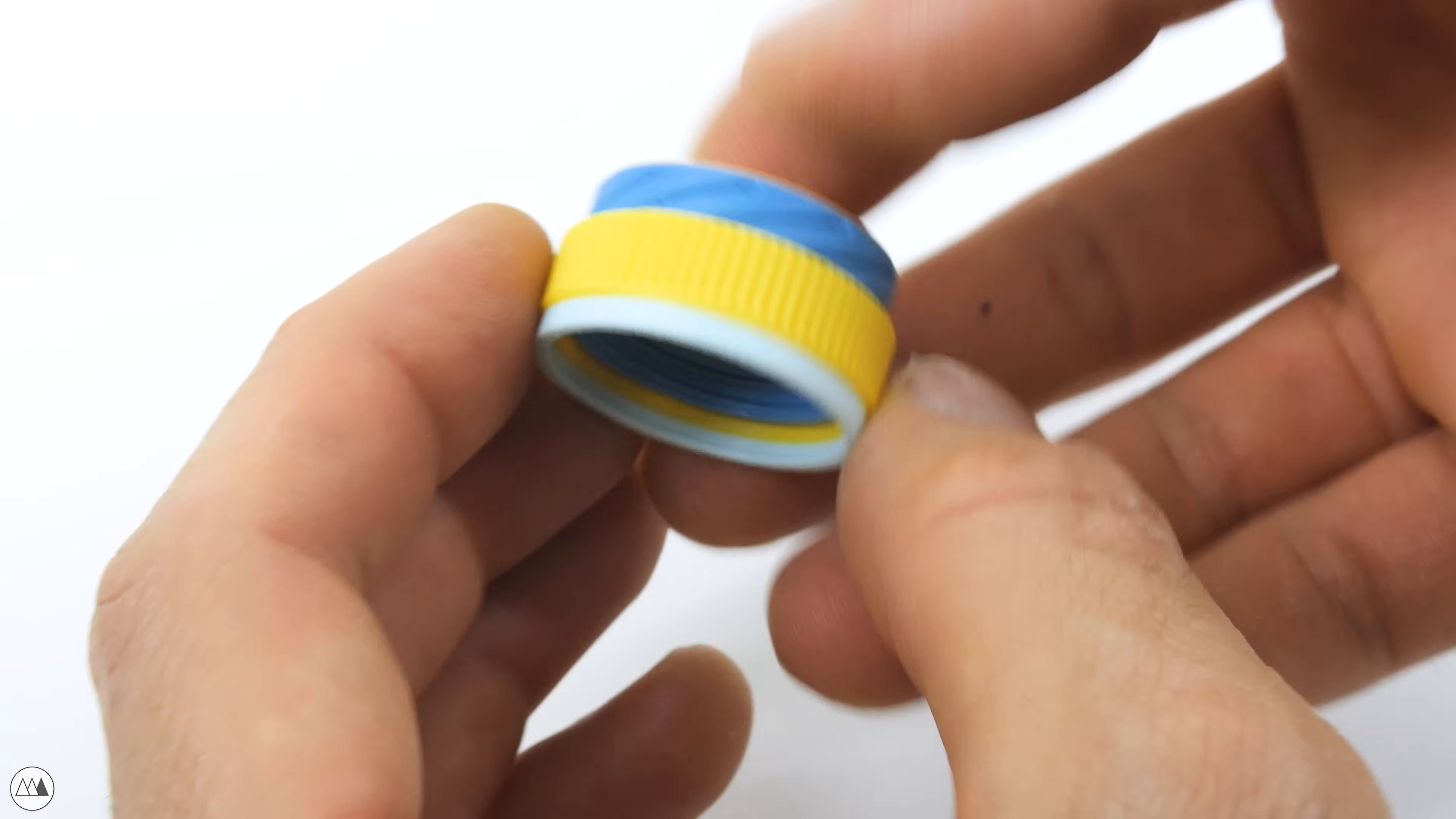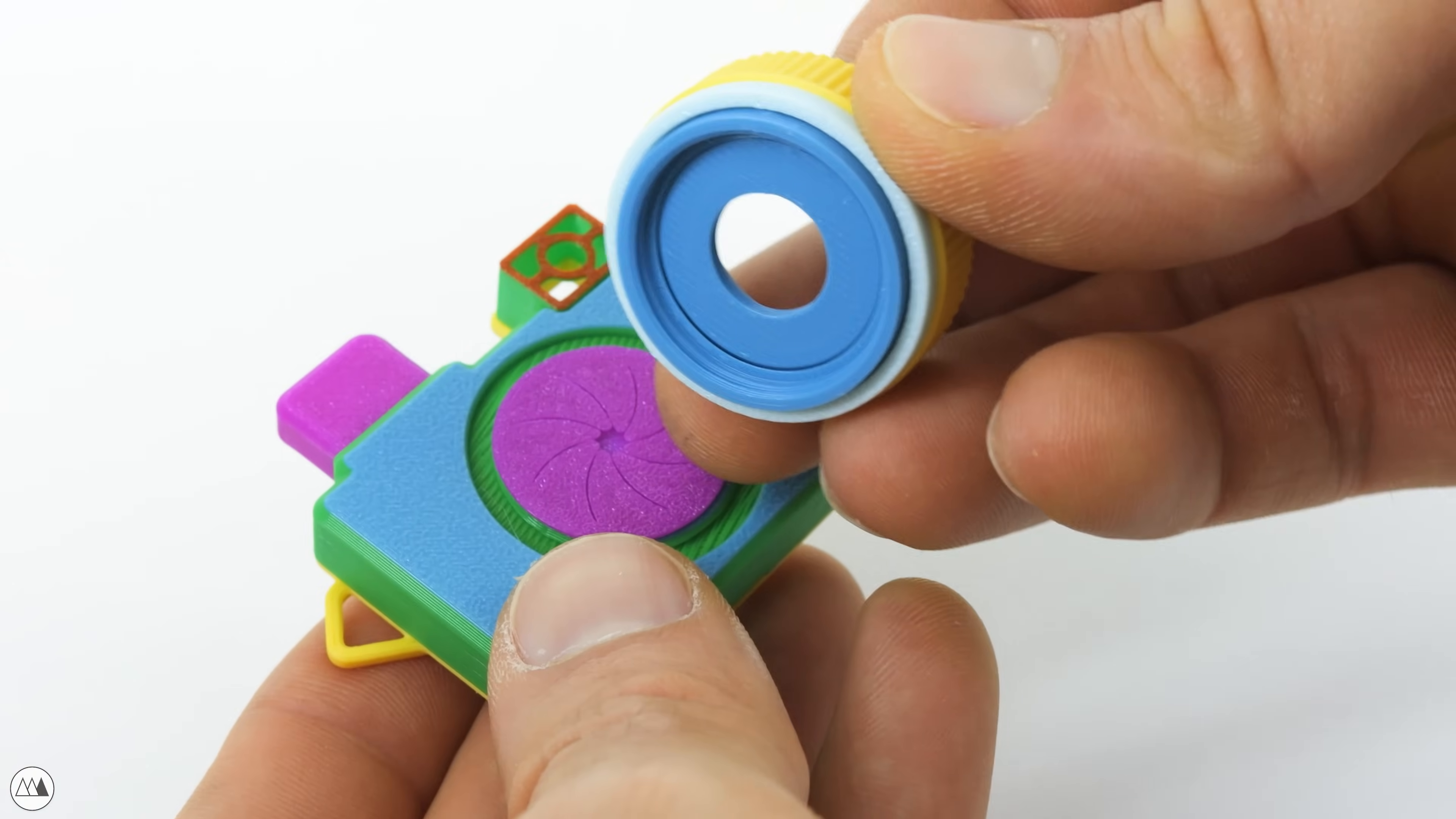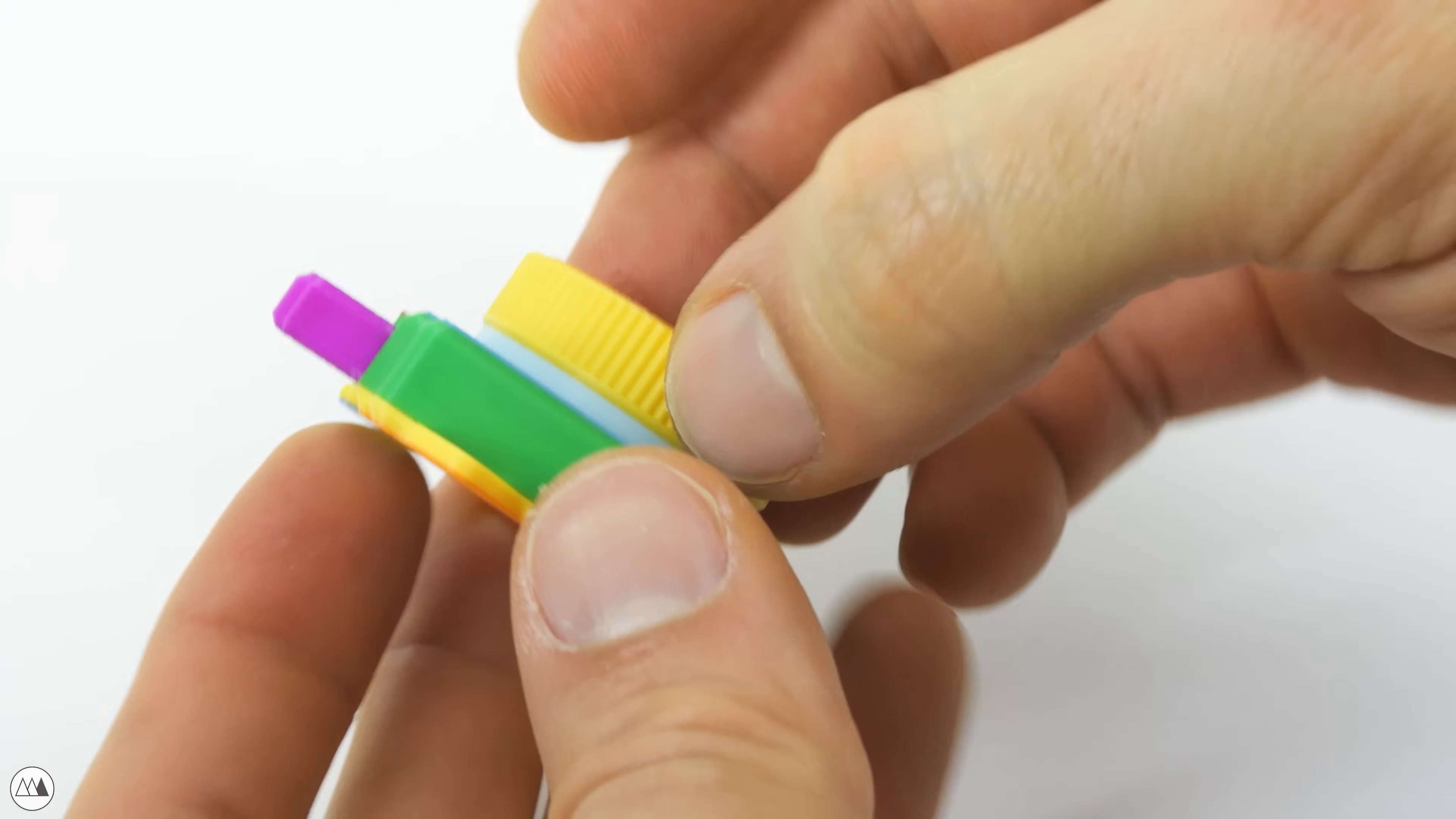If done right, the telescoping action should be quite smooth and gentle. Next we'll place the aperture and then thread the lens onto the camera body. The threads are very short, but if printed well and screwed on securely, you won't need to glue it into place.